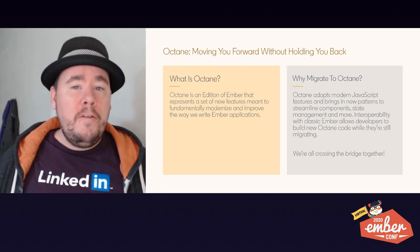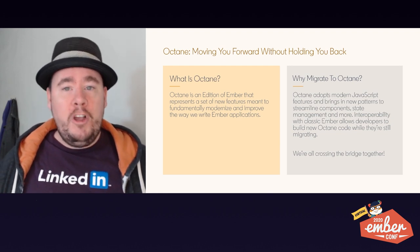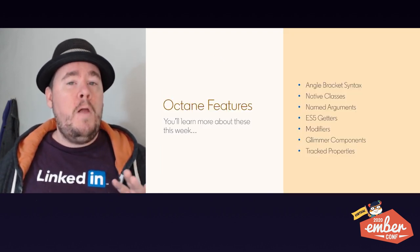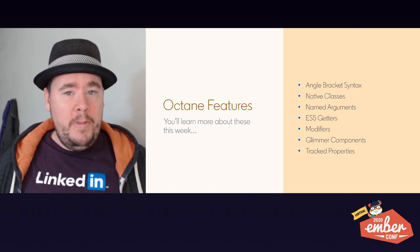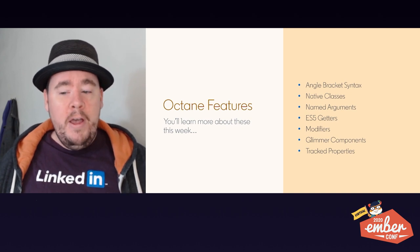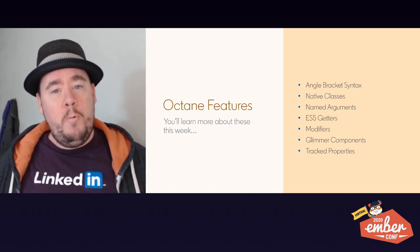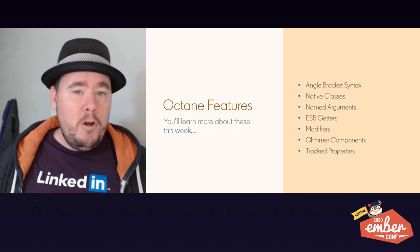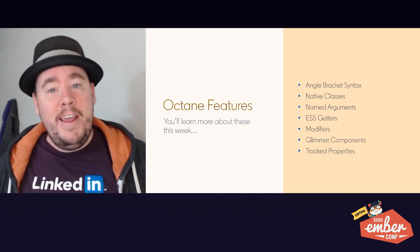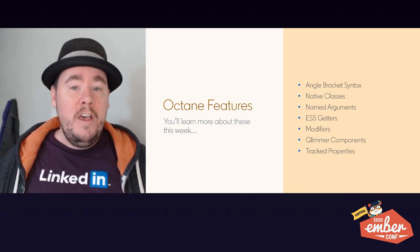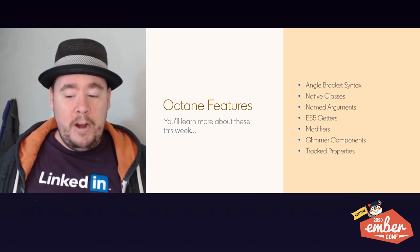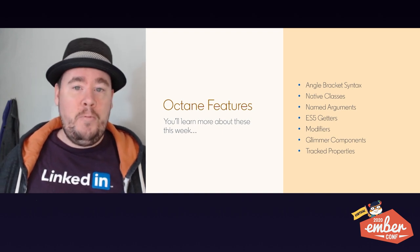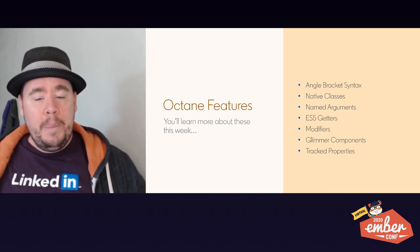There are a lot of different features included in the Octane edition, and you're going to learn a lot more about them this week. Here's a brief list of what you have to look forward to: angle bracket syntax, native classes, named arguments, ES5 getters, modifiers, Glimmer components, and tracked properties.